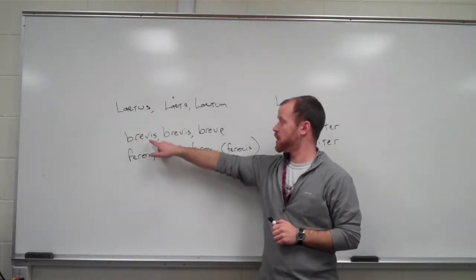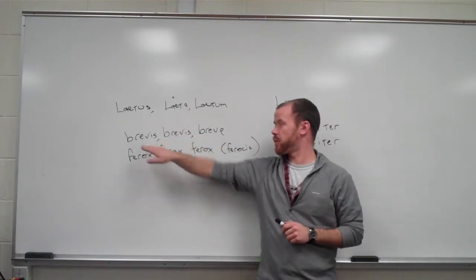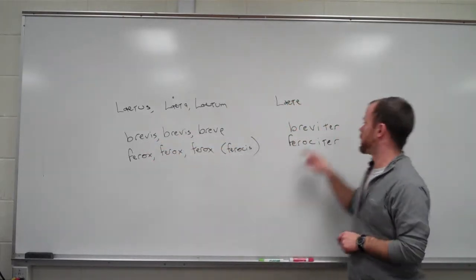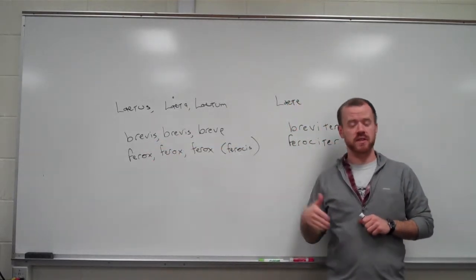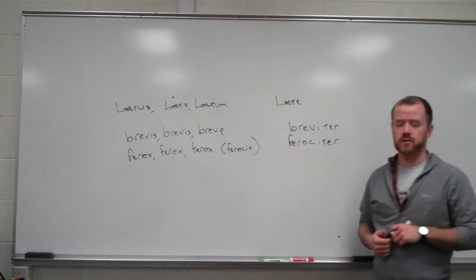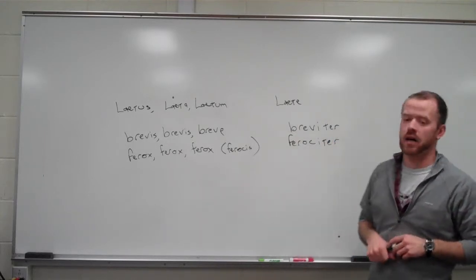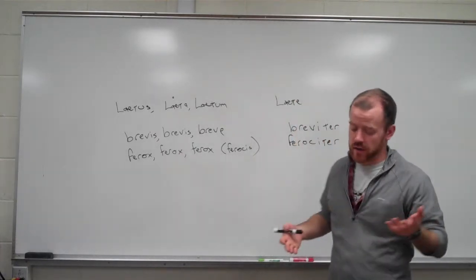So you took the genitive form of brewis and ferox. So it was brewis and ferocis. You chop, you got rid of the s, you subtracted the s, and you added t-e-r. And that's all you have.